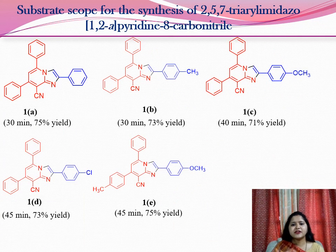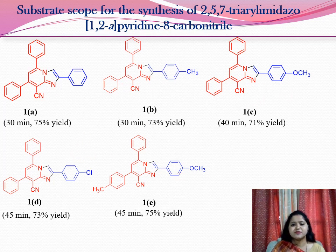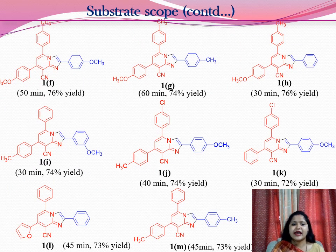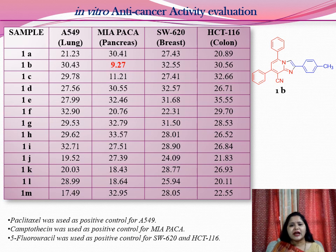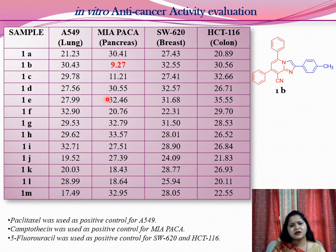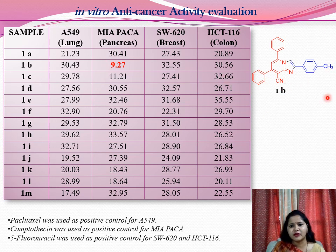These are the various amitazopyridine derivatives synthesized by this method. They are highly substituted, and both electron-donating and electron-withdrawing groups are well tolerated under these conditions. Finally, we evaluated these synthesized molecules for in vitro anti-cancer activity against four cell lines. Some products showed good activity, but one product — product 1B — showed significant activity.